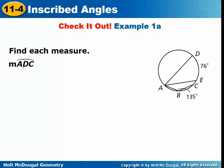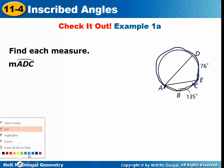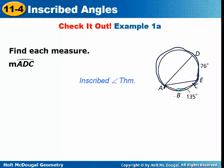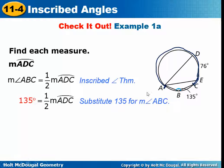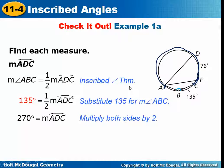This time they want the measure of arc ADC. When three letters name an arc, they're referring to a major arc — greater than 180 degrees. That's a big arc. Its inscribed angle is angle ABC, which is 135 degrees. So you put 135 in for angle ABC, multiply both sides by 2, and get 270 degrees for the measure of that arc.